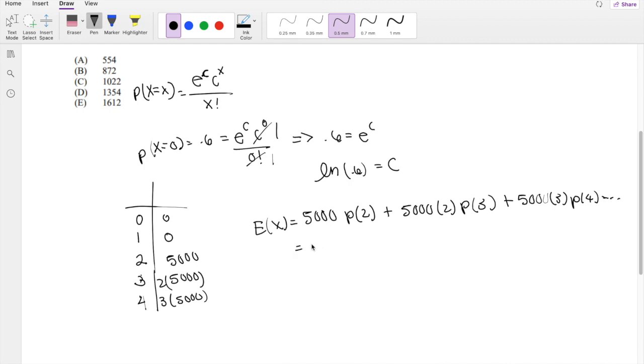So basically this could be summed up. If we factor out the $5,000, this is equal to $5,000 times the probability of 2 plus 2 times the probability of 3 plus... And this is basically the same thing as saying,